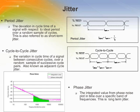Jitter is the most commonly used measurement of clock performance, and it is defined as any deviation of the actual signal edge from the ideal edge. The three most common types of jitter are period, cycle-to-cycle, and phase jitter. Common jitter performance can range from less than 200 femtoseconds to 100 picoseconds. Period jitter is the difference between the actual cycle time and the ideal period defined as 1 over f, also referred to as short-term jitter. Cycle-to-cycle jitter is the variation in the cycle time between consecutive cycles over a random sample of cycle pairs, also referred to as adjacent cycle jitter. Phase jitter, also known as long-term jitter, is the integration of the phase noise plot in time over a specified band of frequencies.